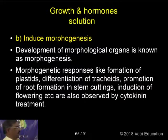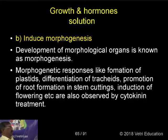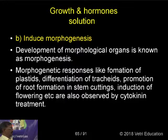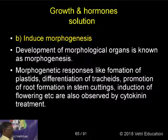Morphogenesis is the development of morphological organs. Morphogenesis responses like formation of plastics, differentiation of circuits, promotion of root formation in stem cuttings, and induction of flowers, etc., are also observed by cytokinin treatment.